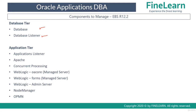On the application tier there are a lot of other components which you have to manage. The first important thing is the application listener, then Apache or basically the HTTP server or web server, then there is concurrent processing for reports. Importantly there is WebLogic Admin Server and there are different managed servers such as OA Core, Forms, and OAFM. The most important managed servers are OA Core and Forms. We also have Node Manager and OPMN. These are all the components which you have to start and stop in order to access E-Business Suite successfully.